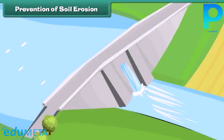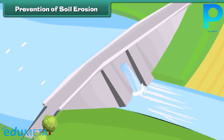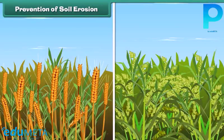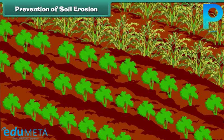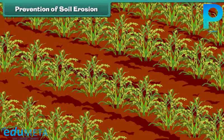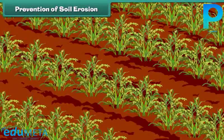Building dams controls soil loss. Some modern techniques of farming need to be practiced — for example, different types of crops should be grown at different times on the same land, and in alternate rows on the same land. These practices control the loss of soil and increase its fertility. Remember, soil is a precious natural resource, and it is our duty to conserve it for keeping the environment healthy.